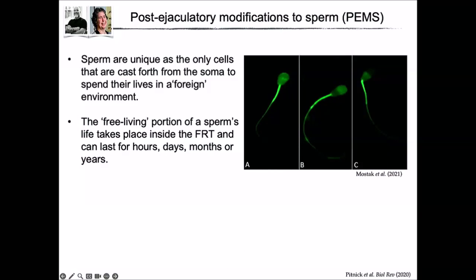This summarizes a Biological Reviews paper published in 2020 with Scott Pitnick and Mariana Wolfner — a comprehensive review of the literature to find descriptive examples where people had looked at post-ejaculatory modification of sperm. Sperm are a unique cell type: cast forth from the soma of the individual in which they develop to spend the majority of their life history in a foreign environment. The free-living portion of sperm's life takes place in the female reproductive tract, and this can be for a very prolonged period — in some species, sperm storage can last months or even years.